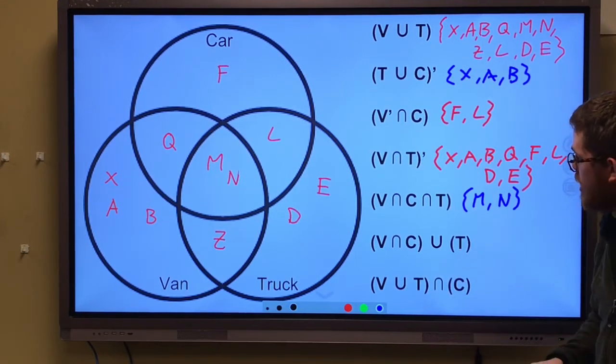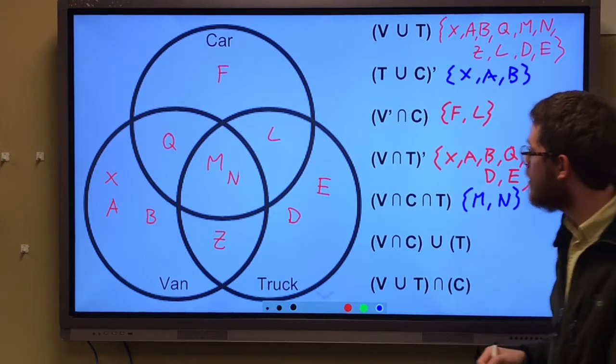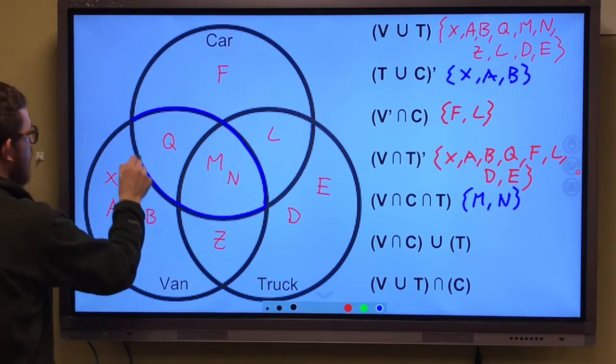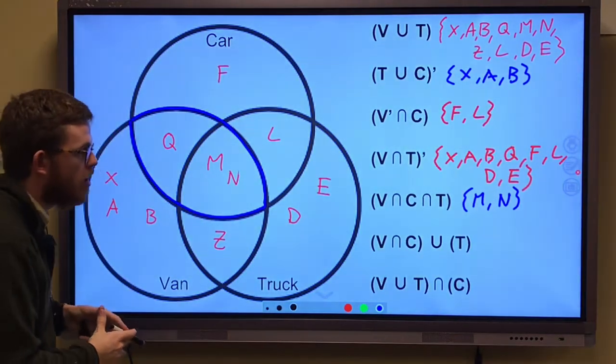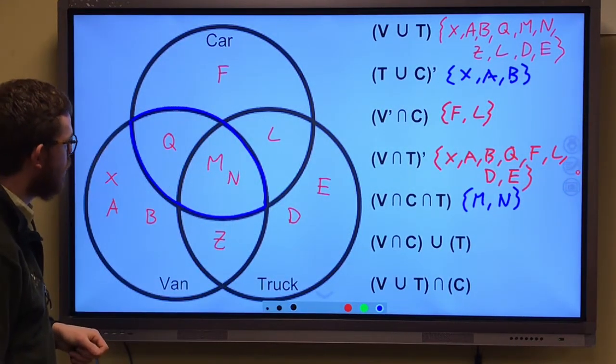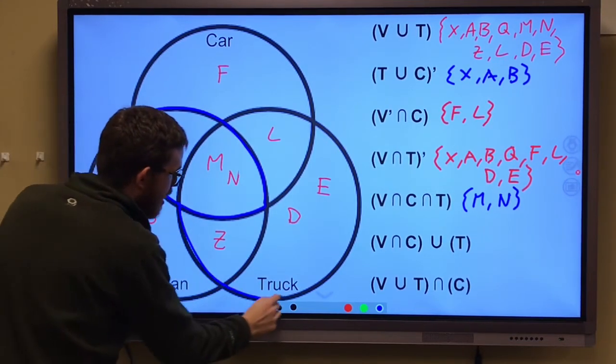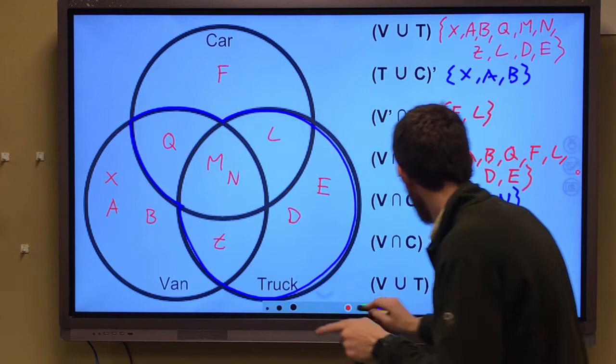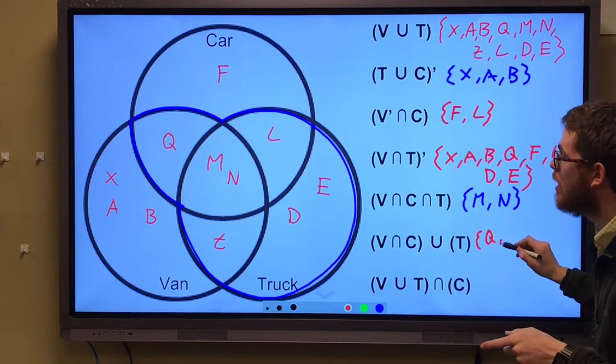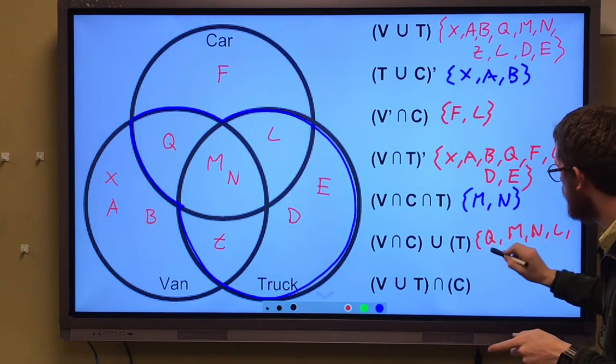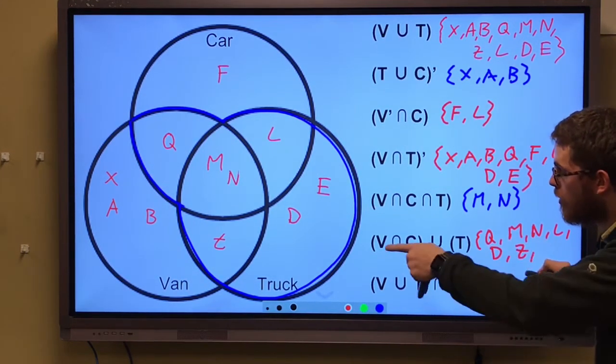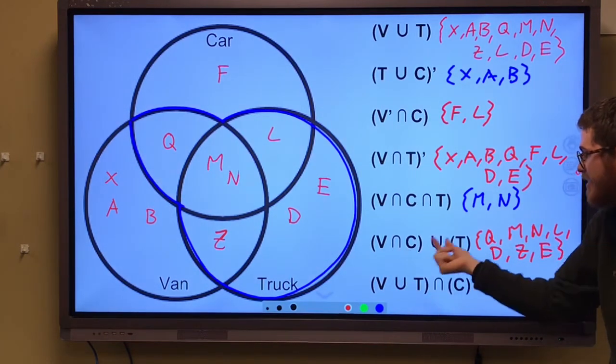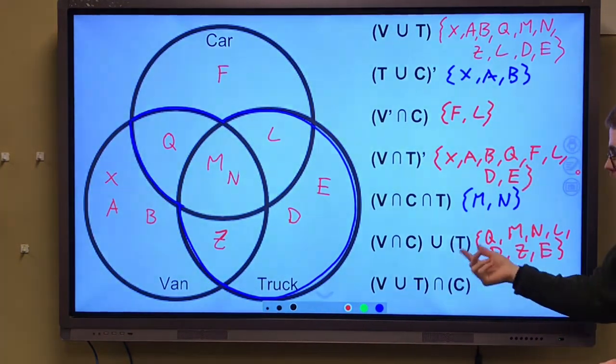This one. The intersection of V and C. The 'and' of V and C. So let me trace that out. Right there. This is where van and car come together. But union with the trucks. So this is all of this stuff and all of the trucks. It's Quentin, Monique, Naomi, Leticia, Dede, Zorro down there, and Evan. Because the union with T, it's all of this plus all of this stuff over here. Bring it all together.